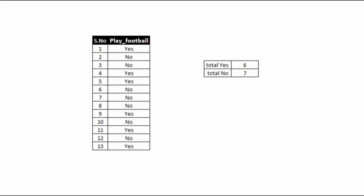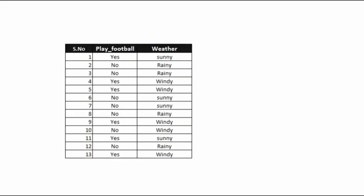So the probability of playing football on the 14th day will be 6 by 13, and not playing football will be 7 by 13. But what happens if I give you some additional data? We have collected weather data for the same 13 days. With this weather data on hand, we want to give a better prediction. So let's understand how a decision tree can help us out.